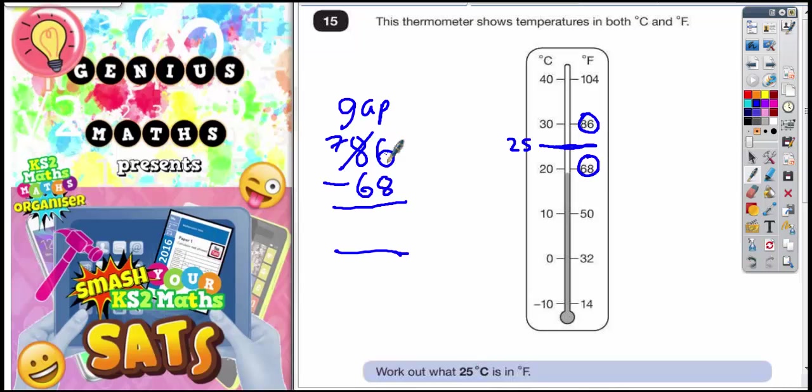The one you've borrowed makes the 6 into 16. 16 take away 8 is 8 and 7 take away 6 is 1. So this gap is basically a gap of 18.